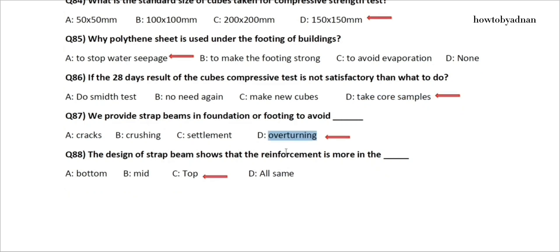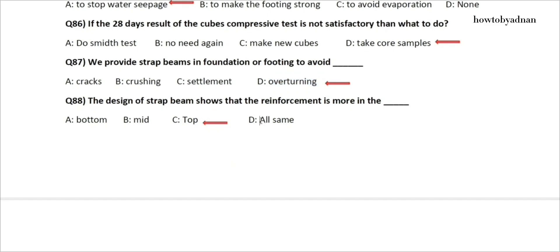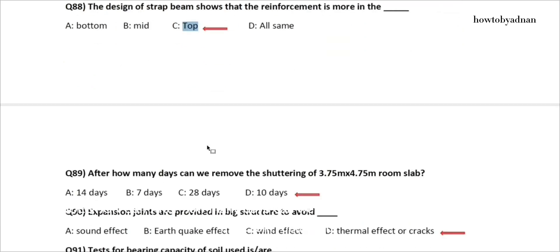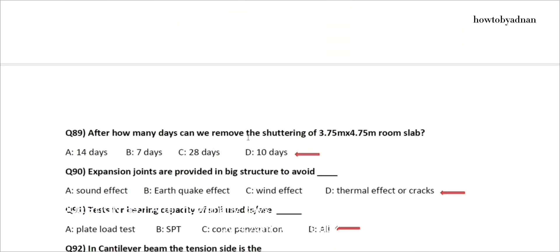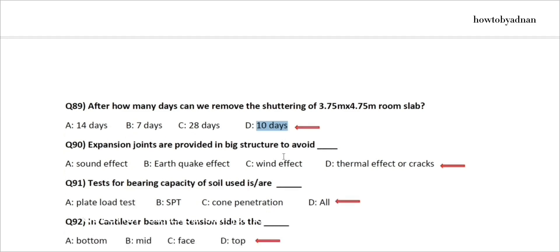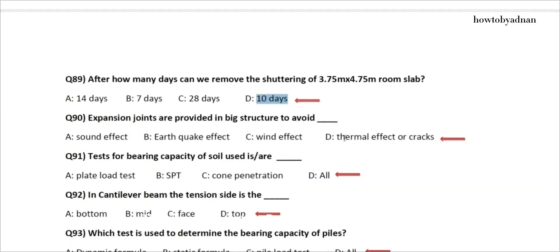Question 88: The design of strap beams shows that the reinforcement is more in the? The answer is option C: Top. Question 89: After how many days can we remove the shuttering of a 3.75 meters by 4.75 meters room slab? The answer is option D: 10 days. Question 90: Expansion joints are provided in big structures to avoid? The answer is option D: Thermal effect or cracks. Question 91: Tests for bearing capacity of soil used are? The answer is option D: All.